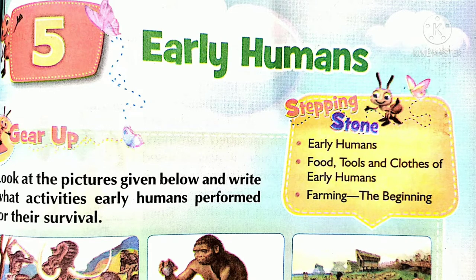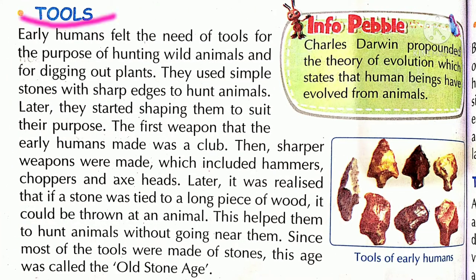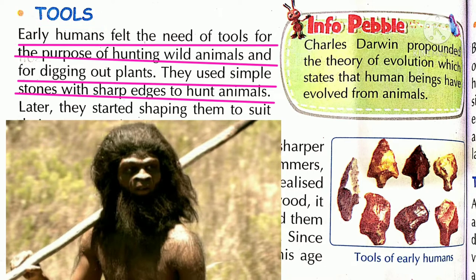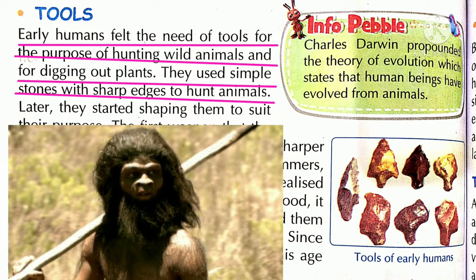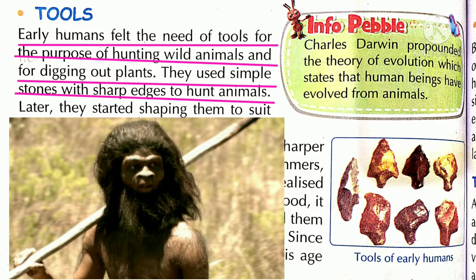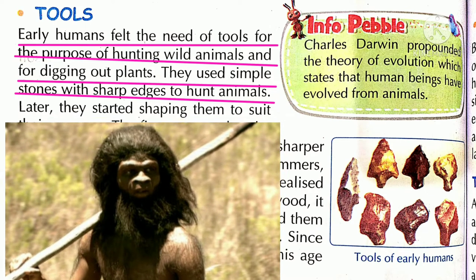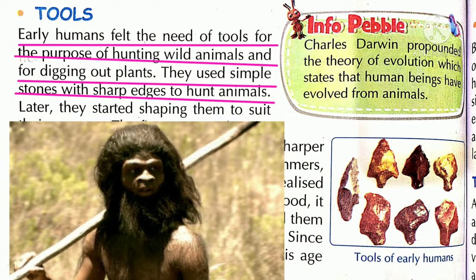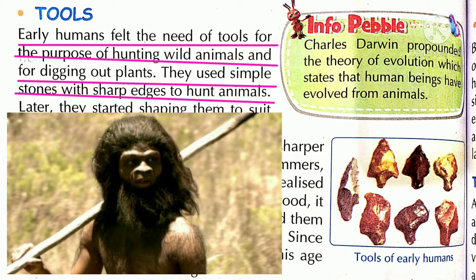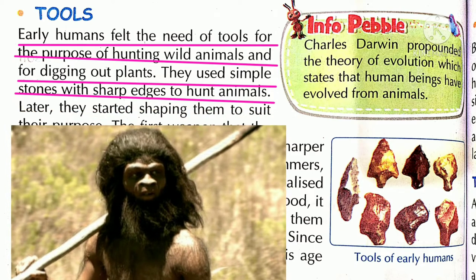Dear students, aaj ham padhenge tools — tools yani upkaran. Early humans felt the need of tools for the purpose of hunting wild animals and for digging out plants. They used simple stones with sharp edges to hunt animals.